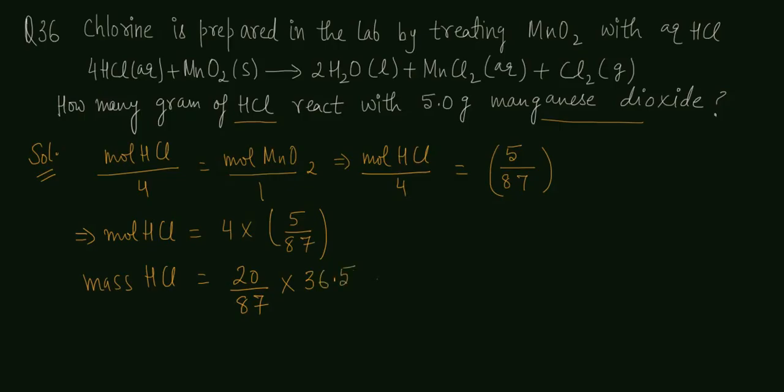HCl's molar mass is 36.5 gram per mole. So if you solve it, the mass of HCl turns out to be 8.4 gram.